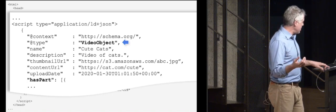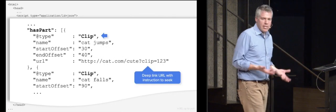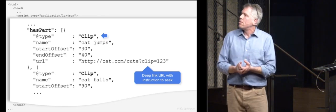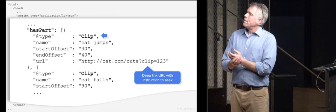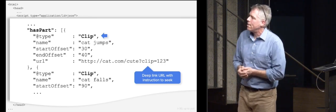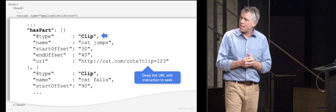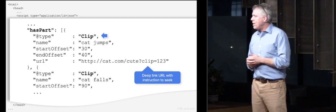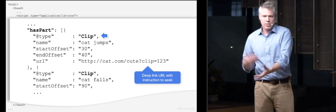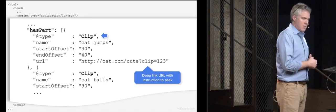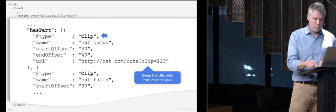And then for the has part, this is where I think it gets a little more interesting. This is where you're defining the clips with a name, a start offset. These are in seconds, end offset, which is optional. You don't have to specify that, but we'll come back to it. And a URL. And this is the URL that Google is going to link to, and then somehow magically the video will play.